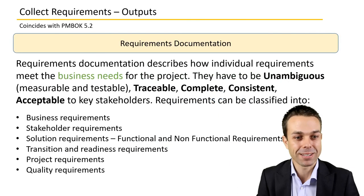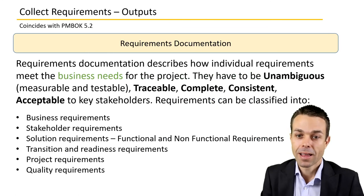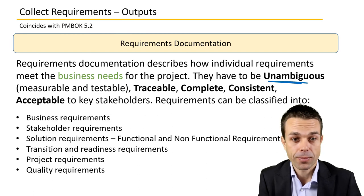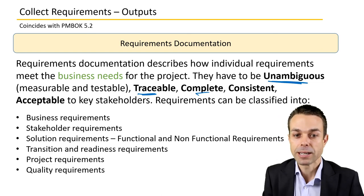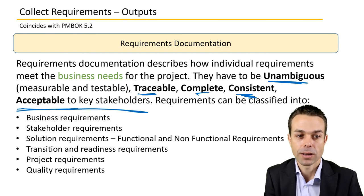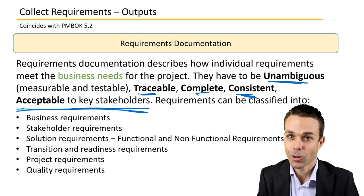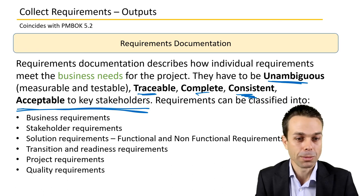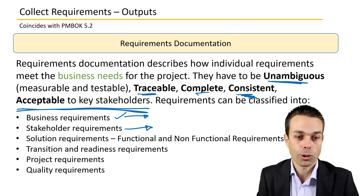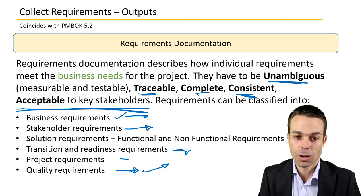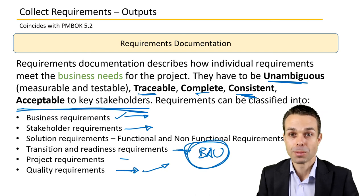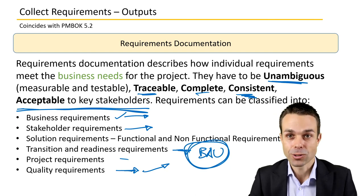Outputs include requirements documentation. Once gathered, requirements need to be unambiguous — very clear — traceable, so we know the requirement matches the deliverable, complete, consistent, and acceptable to the key stakeholders who need to sign off on them. These can include business requirements, stakeholder requirements, project requirements, quality requirements — does it have to be of a high grade or high quality — and any transition or readiness requirements for returning to business as usual, such as training or communications.